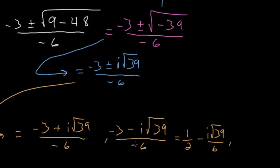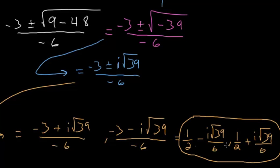And for the right one, since we have -3 minus i√39 divided by a negative, all of this becomes positive. And 3 divided by 6 is 1/2, so we have 1/2 + i√39 divided by 6. And these are our two roots of that original quadratic.